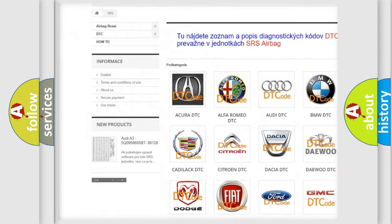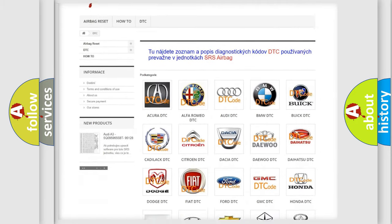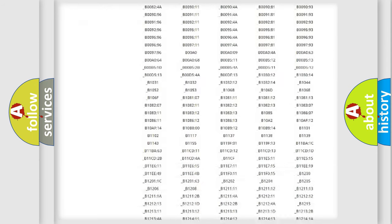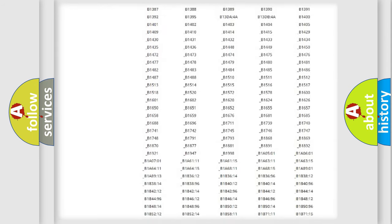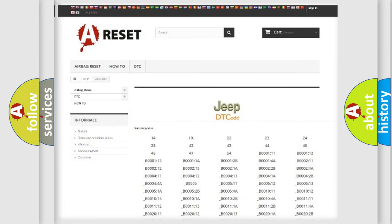Our website airbagreset.sk produces useful videos for you. You do not have to go through the OBD2 protocol anymore to know how to troubleshoot any car breakdown. You will find all the diagnostic codes that can be diagnosed in Jeep vehicles, and many other useful things.